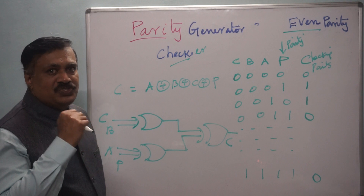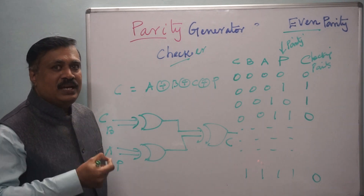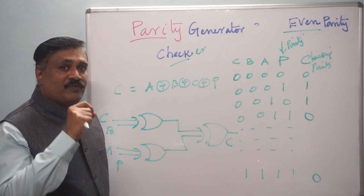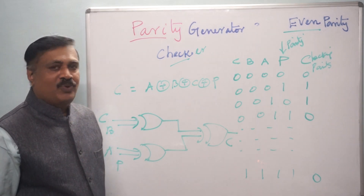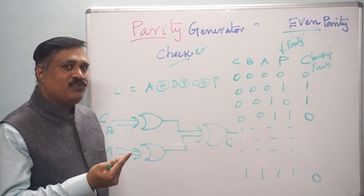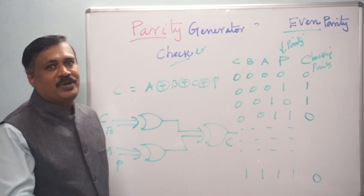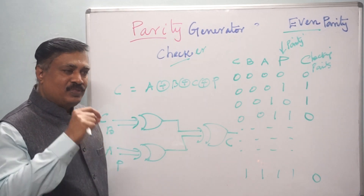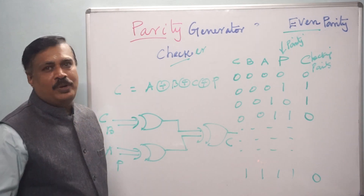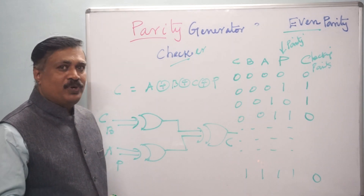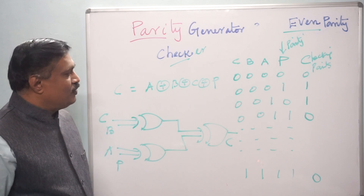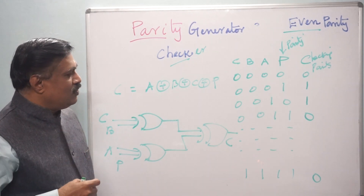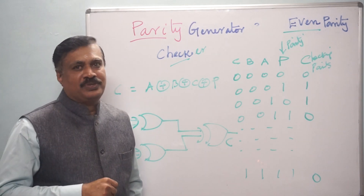The parity checker will tell whether there is an error or the data is error-free. But it cannot tell in which particular bit the error is. For that, you have to go for Hamming code. In Hamming code, you can find out the error in a particular bit. I have uploaded that Hamming code video also — if you want to see it you can, and if you have any doubts please put them in a comment. Thank you.